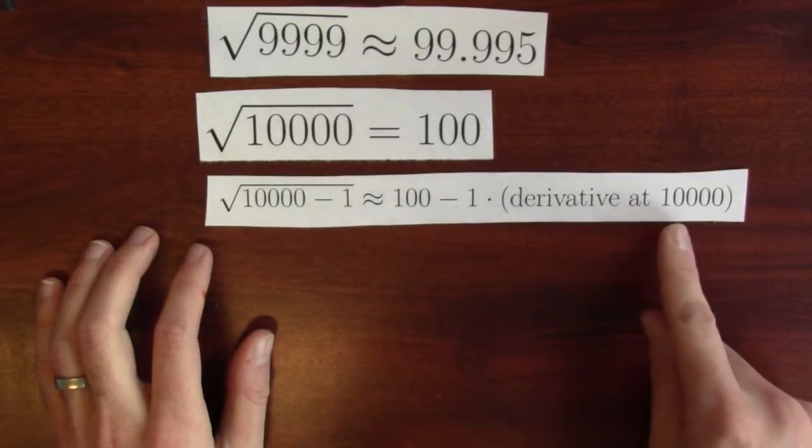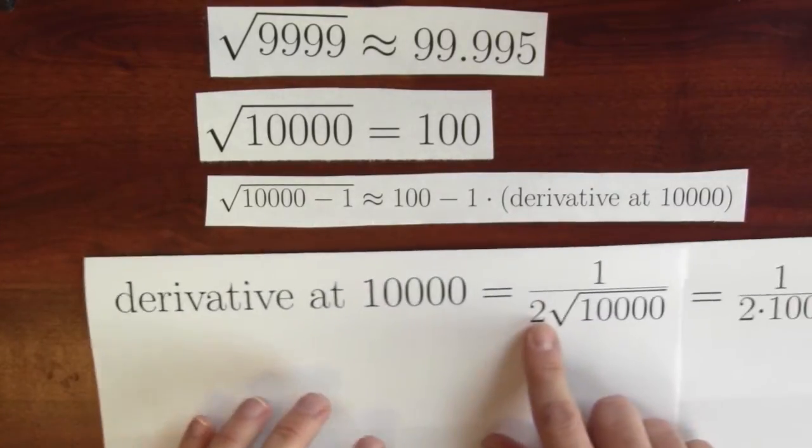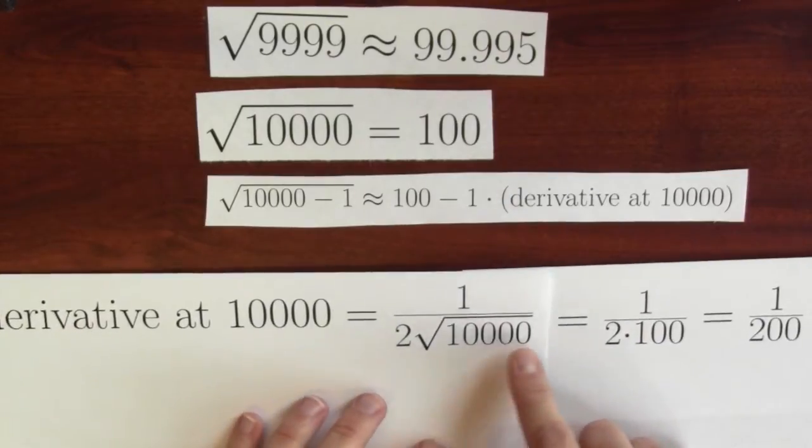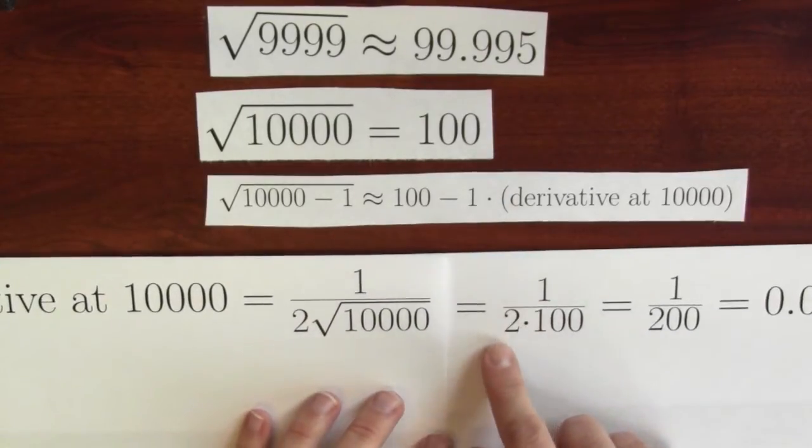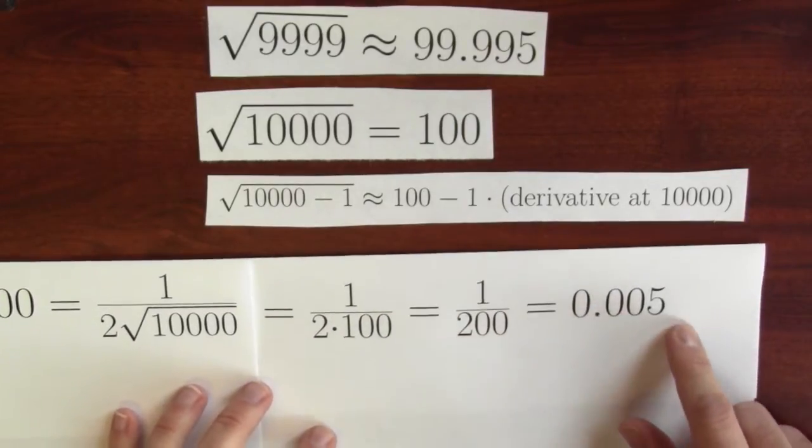Now we can try to calculate the derivative at 10,000. What's the derivative at 10,000? Well, it's 1 over 2 times the square root of 10,000. The square root of 10,000 is 100, so it's 1 over 2 times 100. 1 over 2 times 100 is 1 over 200, which is .005.